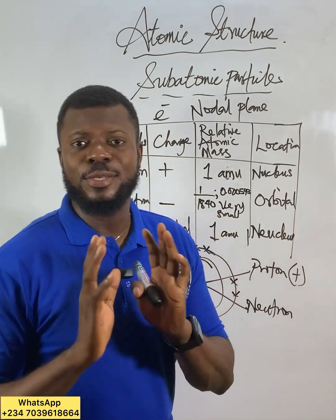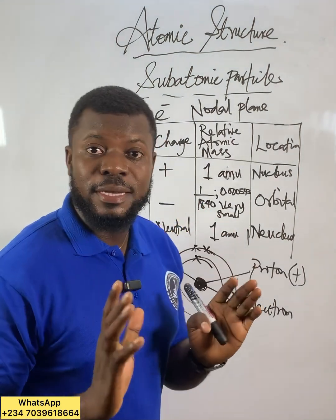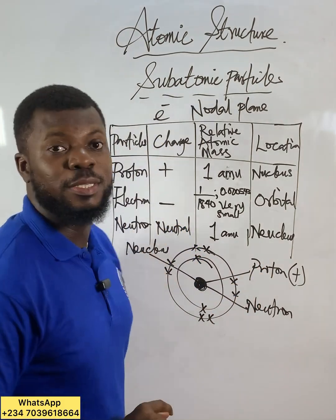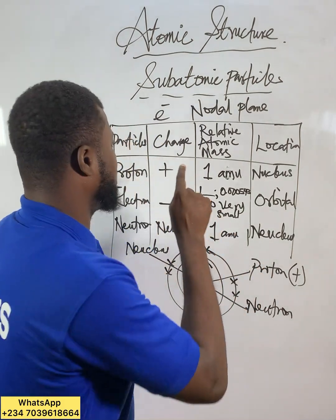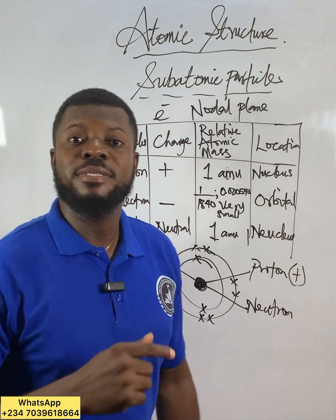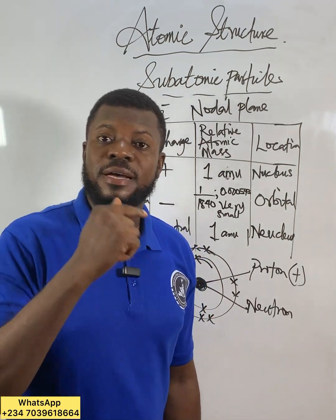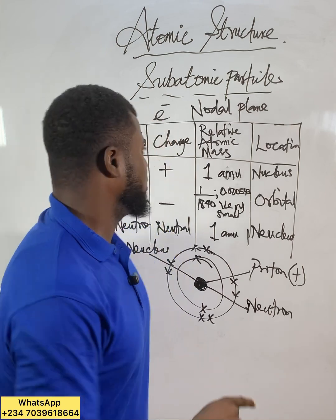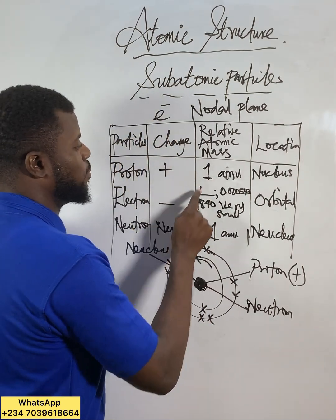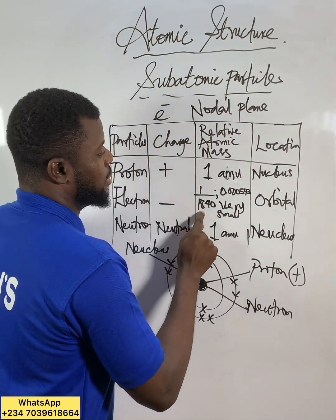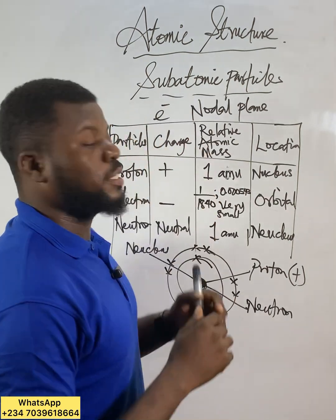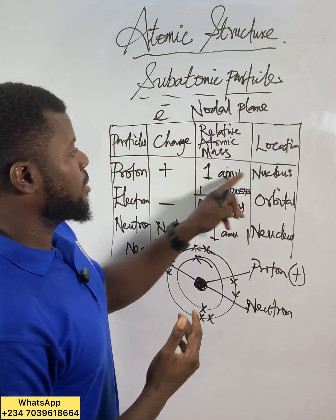If you ask about sub-atomic particles, tell them: proton, electron, neutron. Their charges are positive for the proton, negative for the electron, neutral for the neutron. Their relative atomic masses: proton is 1, neutron is 1, electron is 1/1836 or 1/1840 — either is correct.